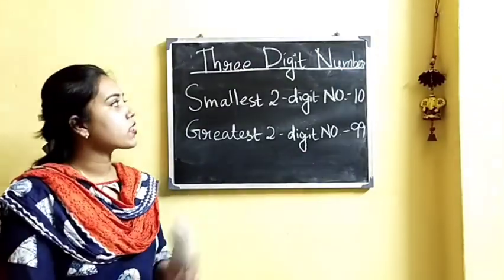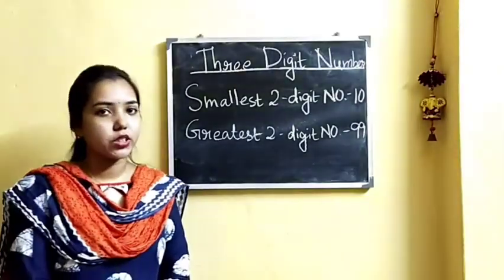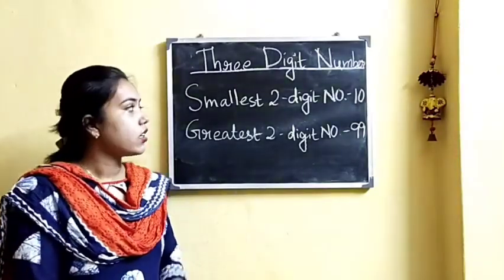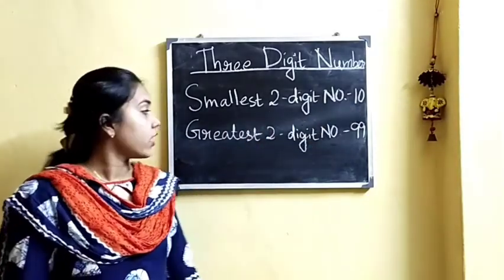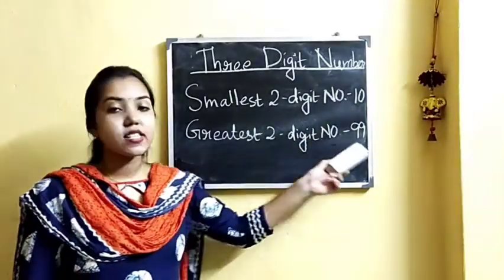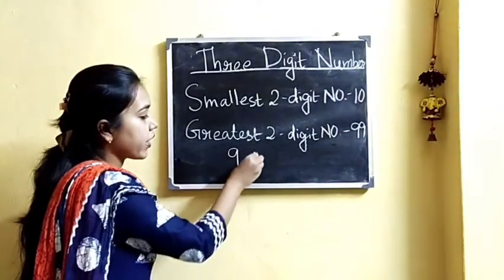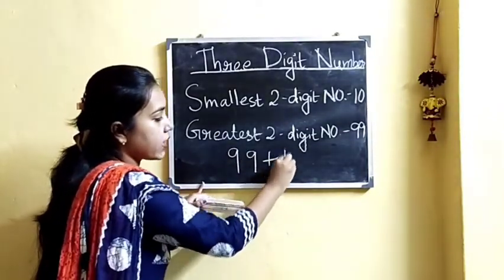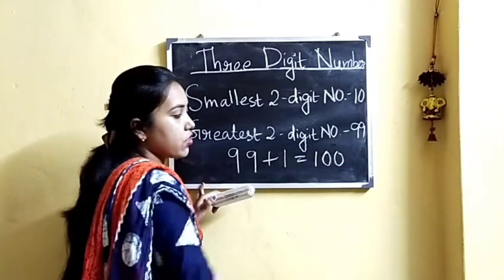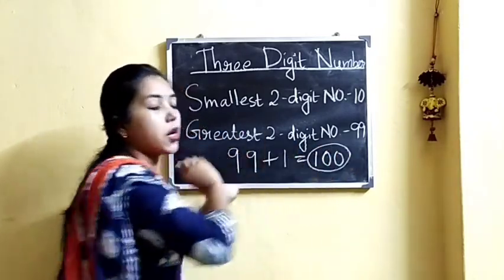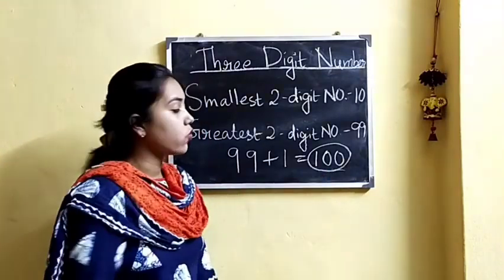But before studying 3-digit numbers I would like to recall some facts about 2-digit numbers. The smallest 2-digit number is 10 and the greatest 2-digit number is 99. Now if we add 1 to the greatest 2-digit number, that is 99, it will become 100, which is the smallest 3-digit number. And we can read it as 100.